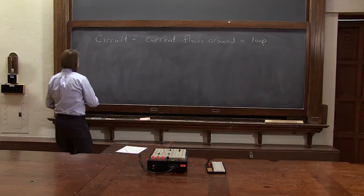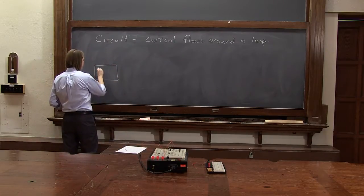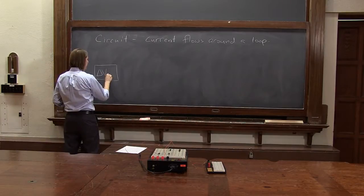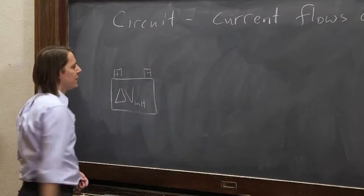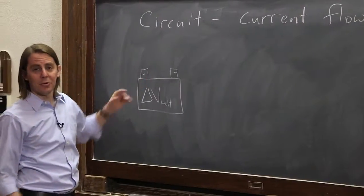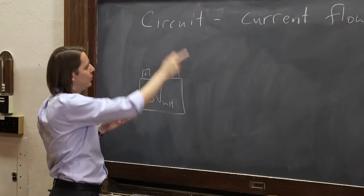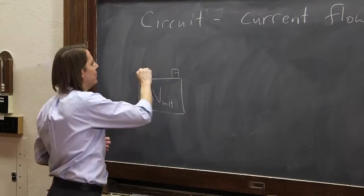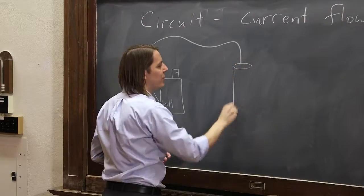If I were going to draw a circuit in the real world, in a little cartoon world I live in as a physicist, I would draw something like this. Here's a battery. It's got a positive and a negative terminal. That's where the battery does its electrochemical work to make current flow from one side to the other. It's probably got some wires on it.